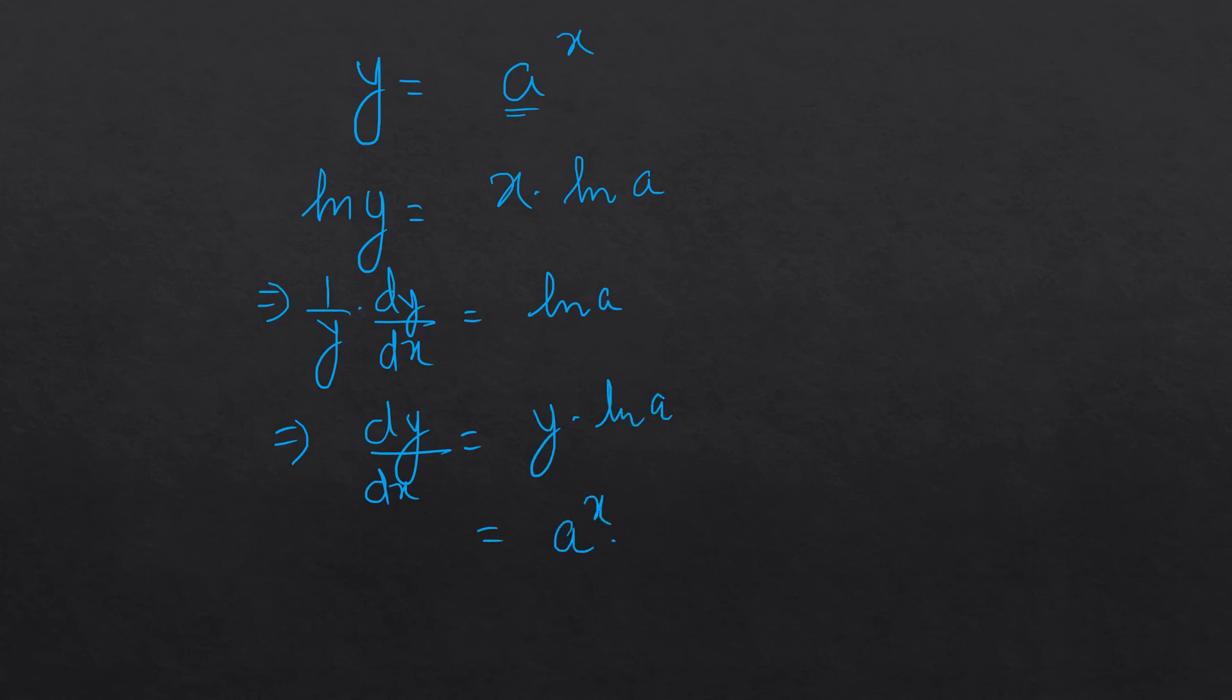Which is equal to a to the power x times ln a. So this is what our derivative is going to be. Here the assumptions are that a is greater than 0, and rest will fall in place.